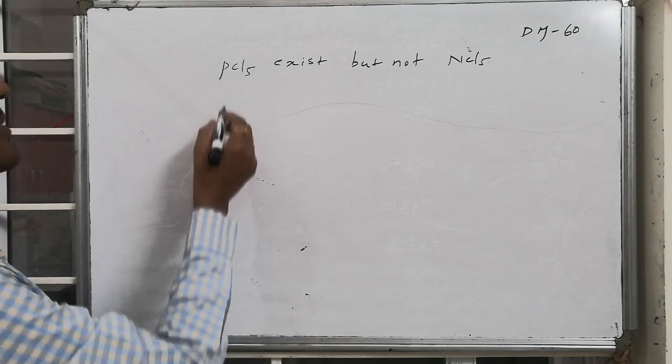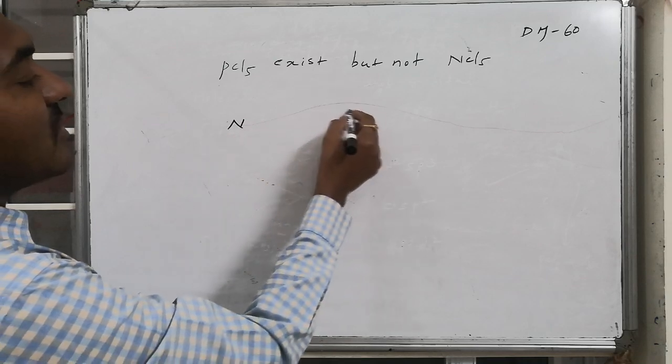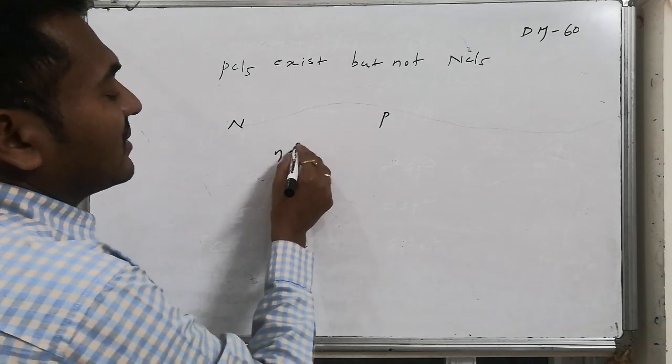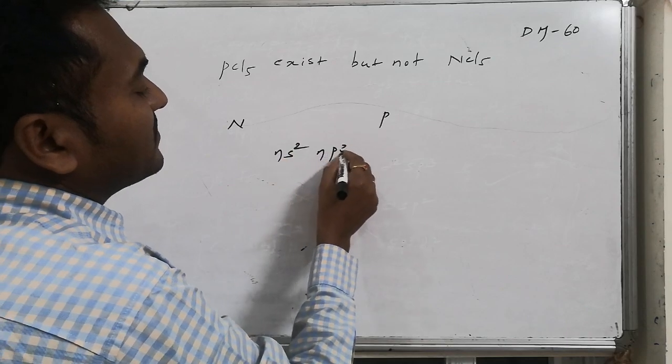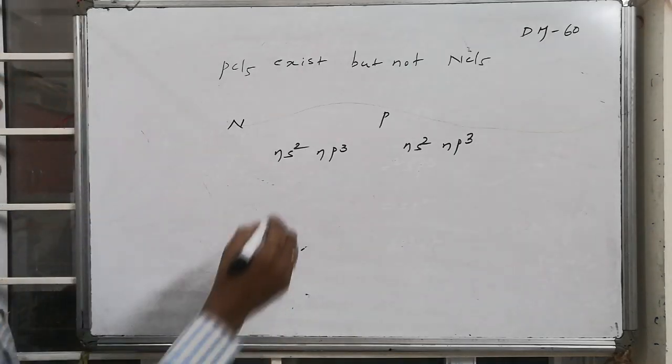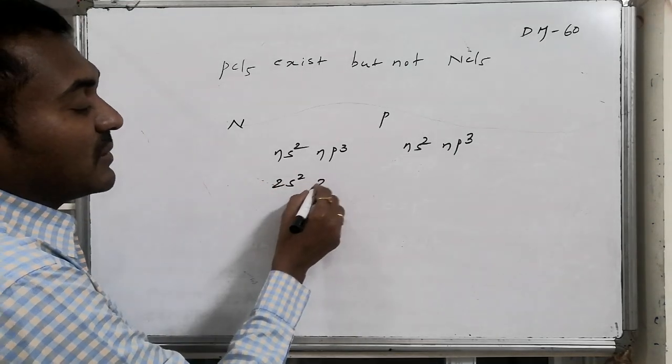The reason is if I go for nitrogen and phosphorus, both belong to the same family. That is, outer electronic configuration is NS2 followed by NP3. Here also NS2 followed by NP3. But this N orbital is second, that is 2S2 followed by 2P3.